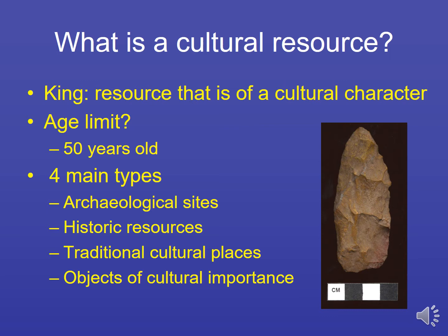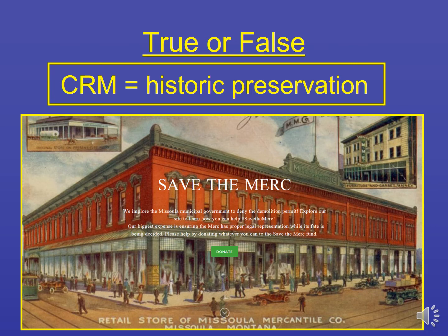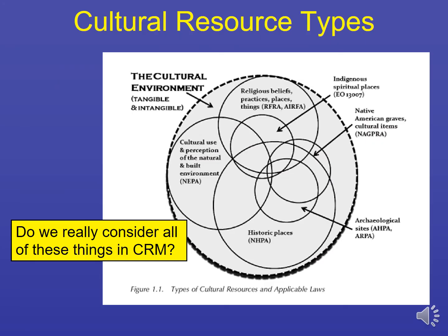There's a video I want you to watch on traditional cultural places, or TCPs, for this week. True or false: does cultural resource management equal historic preservation? That's false. There is a lot of overlap between historic preservation and CRM, but the laws we'll discuss actually allow the legal destruction of cultural resources, so historic resources are not always preserved in CRM. A figure from Tom King's book, Cultural Resource Law and Practice, illustrates the overlap between cultural resources and the relevant laws.